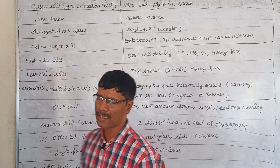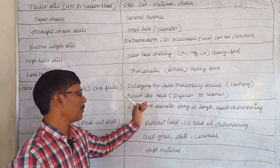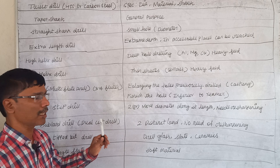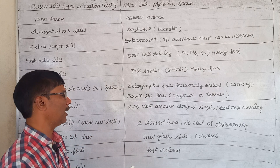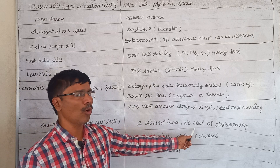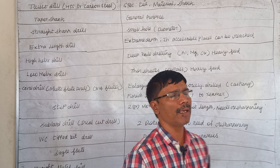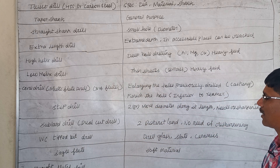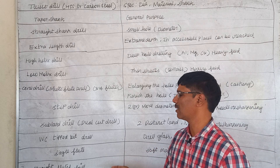A step drill can produce two or more diameters along its length simultaneously, but it needs resharpening. A subland drill, also called a dual cut drill, has two distinct lands and does not need resharpening. A tungsten carbide tipped drill bit is used to drill glass, slate, and ceramics. A single flute drill is used to cut soft materials, and we also have a straight fluted drill.